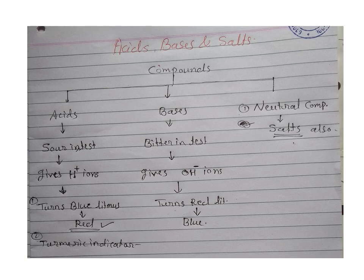There are many substances — for example, lemon, tamarind, sugar, vinegar, water, toothpaste, baking soda. Among these substances, how can we identify which are acids, which are bases, and which are neutral compounds? Compounds are divided into acids, bases, and neutral compounds or salts. We will understand this by using one process — by using an indicator — which are acid, which are bases, and which are neutral compounds.